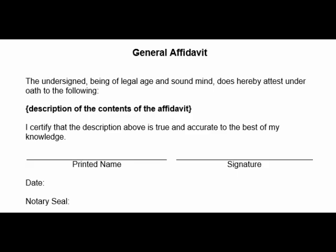An affidavit has the following parts. 1. The title of the affidavit. This is the top section of the affidavit and it consists of the title of the affidavit and contains the name of the person providing the affidavit. Sometimes it also includes the address and surname of the person.